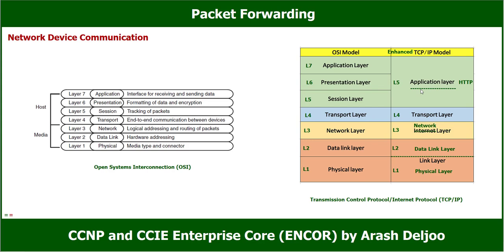The enhanced TCP/IP model has five layers. Layers one through four are exactly the same as in the OSI model with the same names. Layer five has different, broader functionality. Because of this, in many cases you may hear 'layer seven of TCP/IP' — this refers to layer five of the enhanced TCP/IP model. When I say a protocol operates at layer seven of TCP/IP, it means layer five of enhanced TCP/IP.